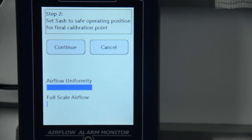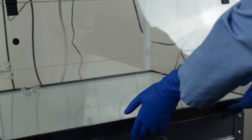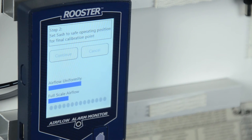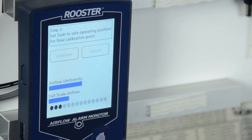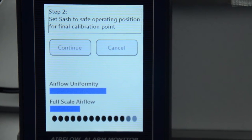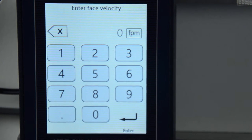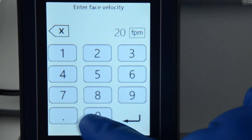For step two, move your sash into the safe operating position. When the progress bar completely fills up, you will be prompted to enter the nominal phase velocity units for the safe operating position.